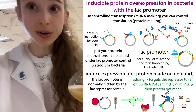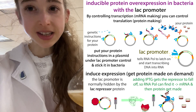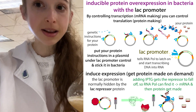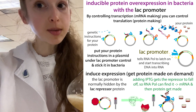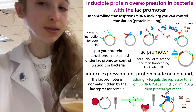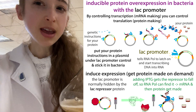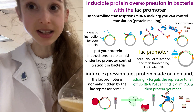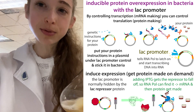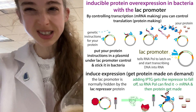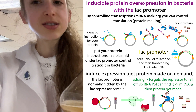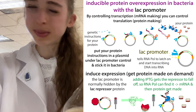Now, normally the bacteria wouldn't want to make this protein, and they don't even have the instructions for making the protein. So I give them those instructions in the form of a circular piece of DNA called a plasmid, in which I put those instructions for making this protein. And then I stick that plasmid into the bacteria - a process called transformation - and so these bacteria now have these plasmids.